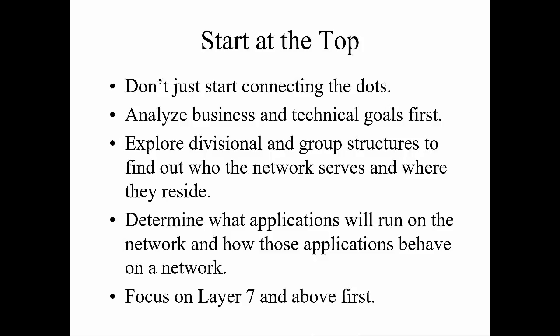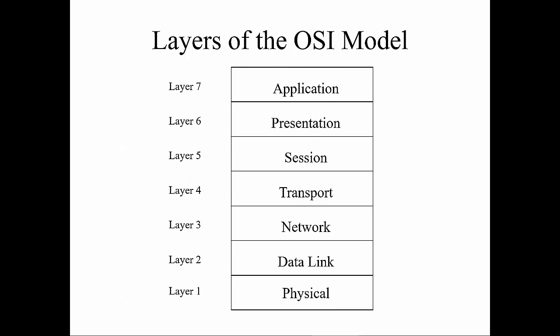Focus on layer 7 and above first — meaning, let's focus on the application and end user. Remember our 7 layers of the OSI model: application, presentation, session, transport, network, data link, and physical. Those are our 7 layers.